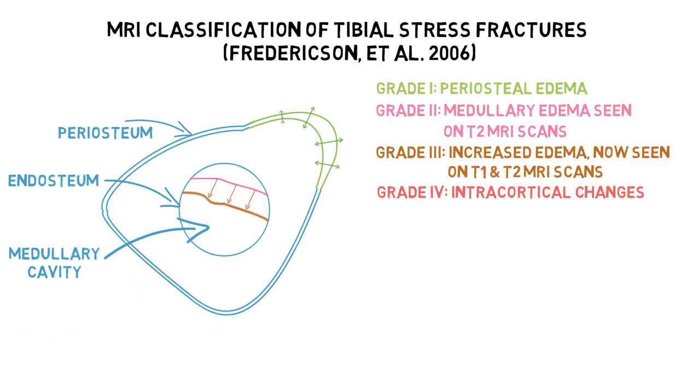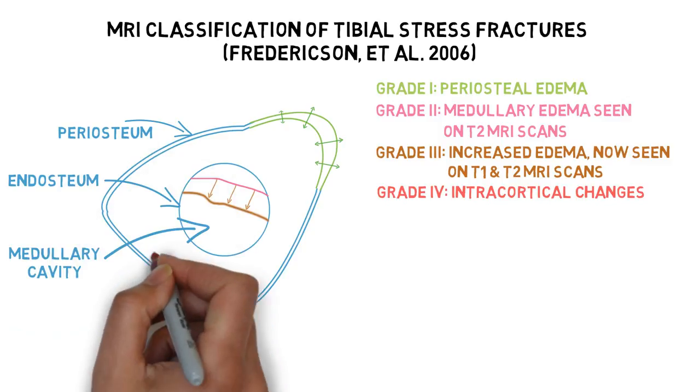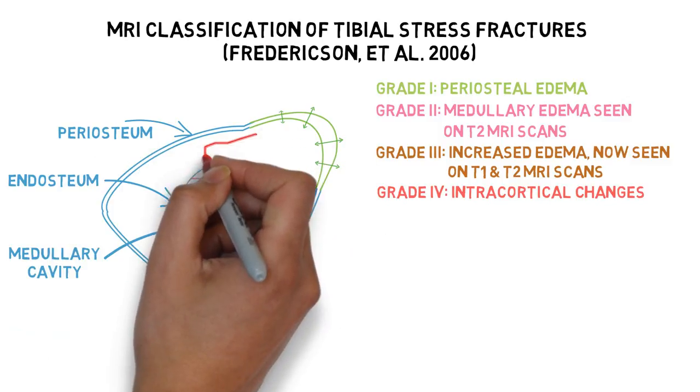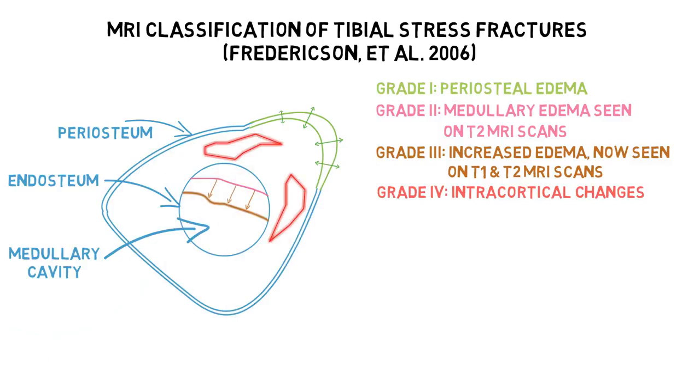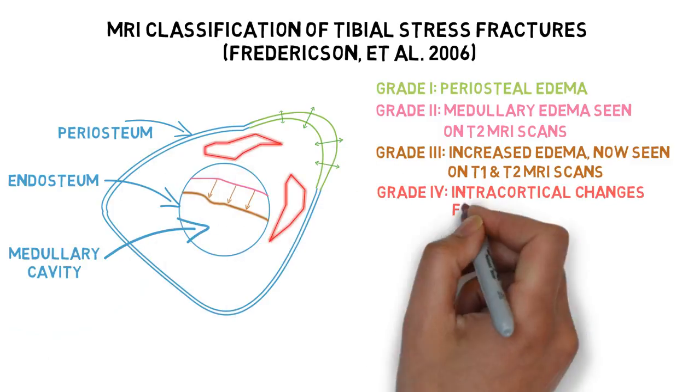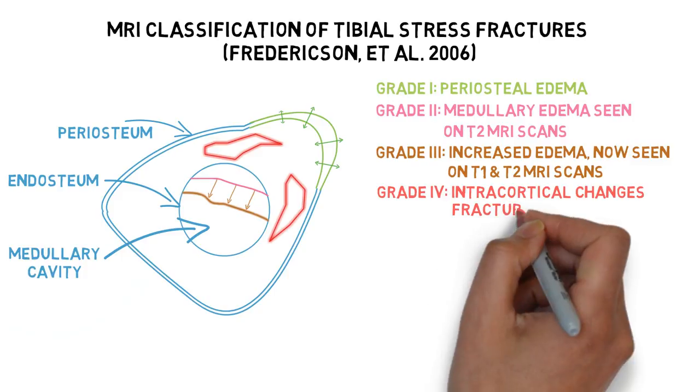Grade 4 describes signal changes in the compact and spongy bone, and now a visible fracture line is seen.